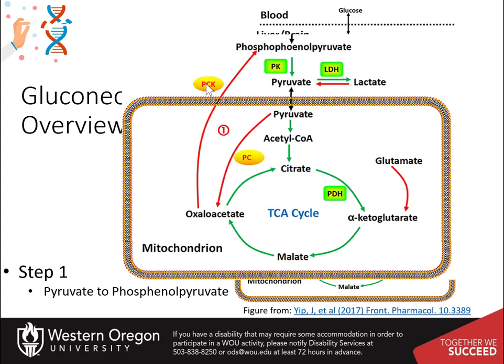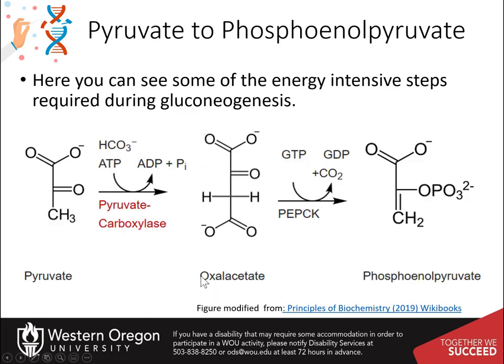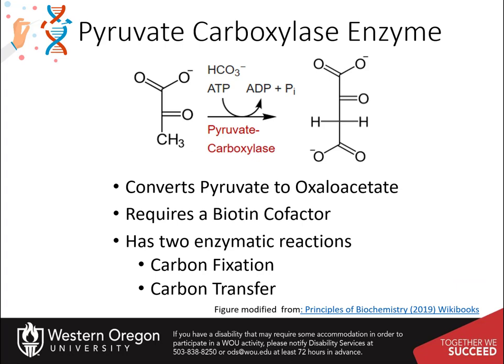Oxaloacetate and aspartate are intermediate compounds formed in the process. To convert pyruvate back into phosphoenolpyruvate, you will need to use one molecule of ATP and one molecule of GTP. This reaction series will have to happen twice for each glucose molecule that will be made. The pyruvate carboxylase enzyme is required for the first step, converting pyruvate into oxaloacetate. Note that oxaloacetate is a normal intermediate formed in the Krebs cycle.